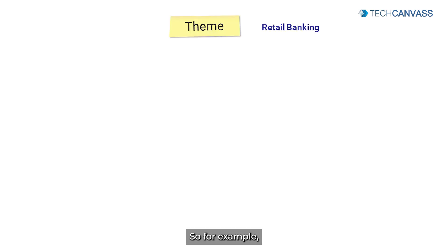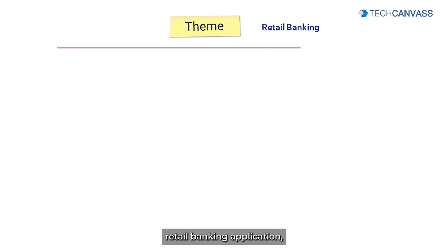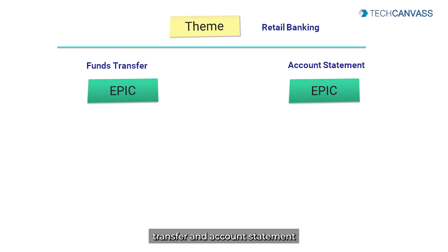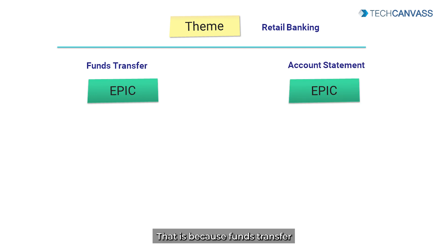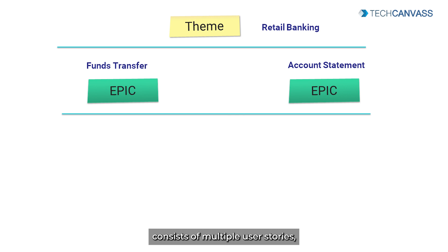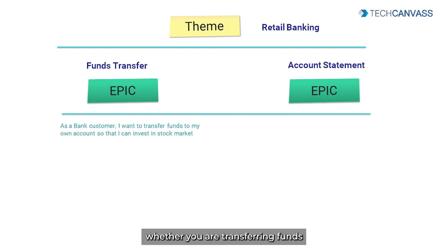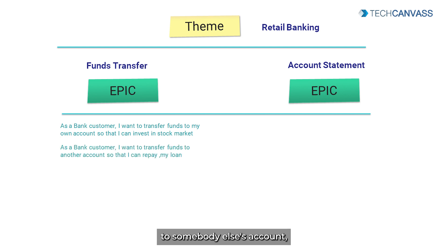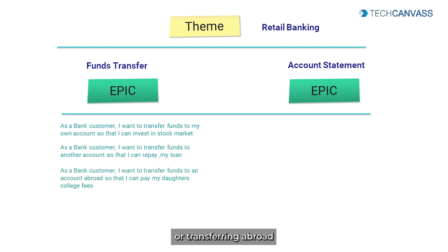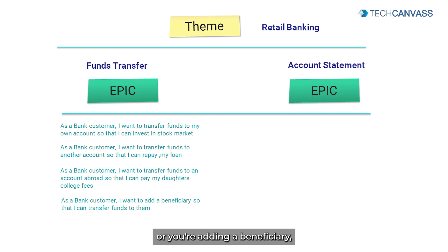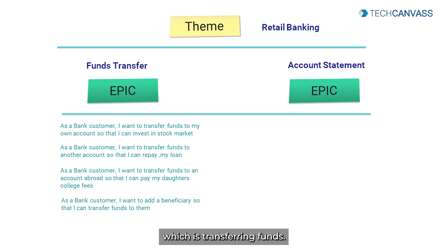For example, in a retail banking application, funds transfer and account statement represent epics. Funds transfer as an epic consists of multiple user stories — whether you are transferring funds to your own account, to somebody else's account, transferring abroad, or adding a beneficiary — they all share the same objective of transferring funds.